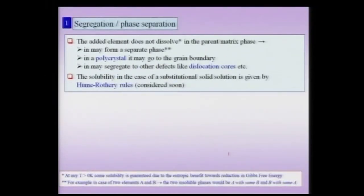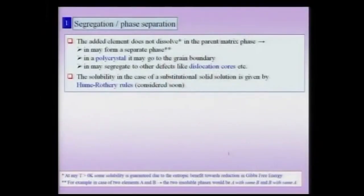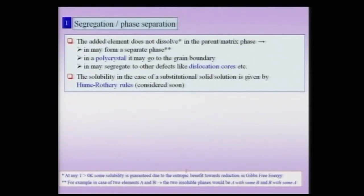Let us take up the first case, which is segregation or phase separation. When I am talking about segregation, I mean that the alloying element has low solubility. And whenever I add more than the solubility limit, then the extra material added would obviously segregate. We should note that whenever I am talking about negligible or zero solubility, what I exactly mean is that it is limited to a very small amount. Zero solubility theoretically is not possible, because there will be a reduction in Gibbs free energy due to entropy benefit. Therefore some small amount of the alloying element would always dissolve in a parent lattice. So this is coming purely from the benefit in Gibbs free energy, and the benefit to the Gibbs free energy is coming from the multiple configurations which are possible when you add an alloying element. Therefore some little solubility is always guaranteed.